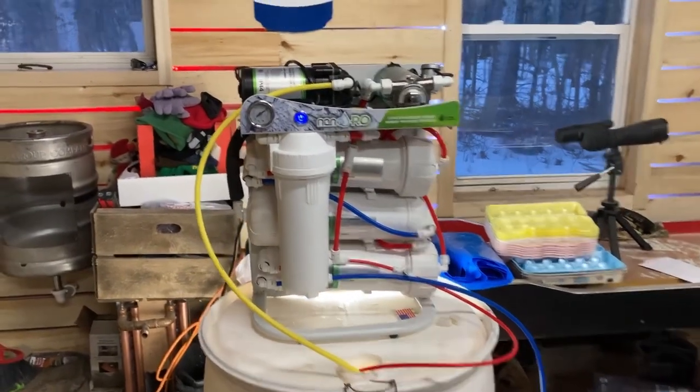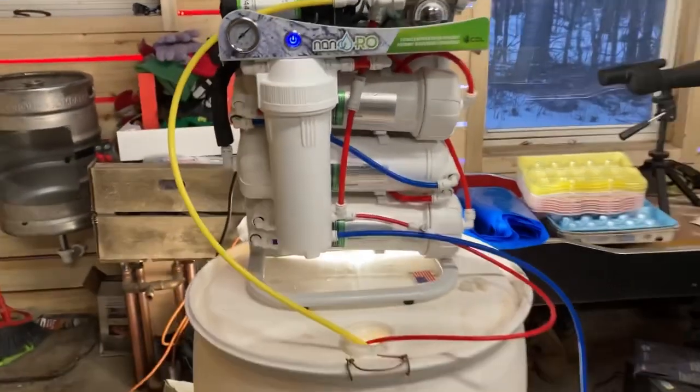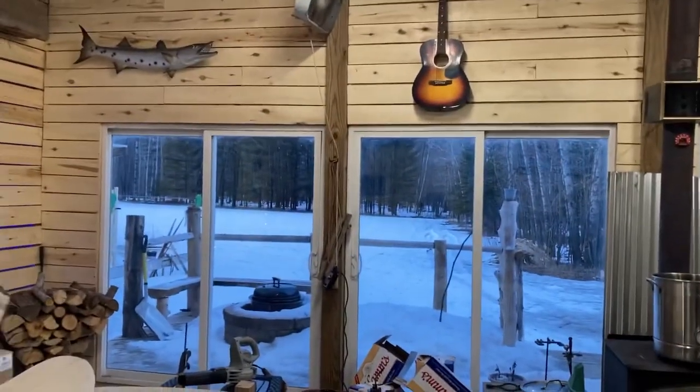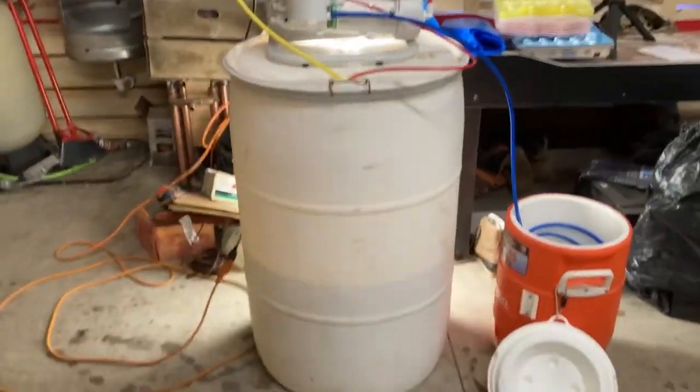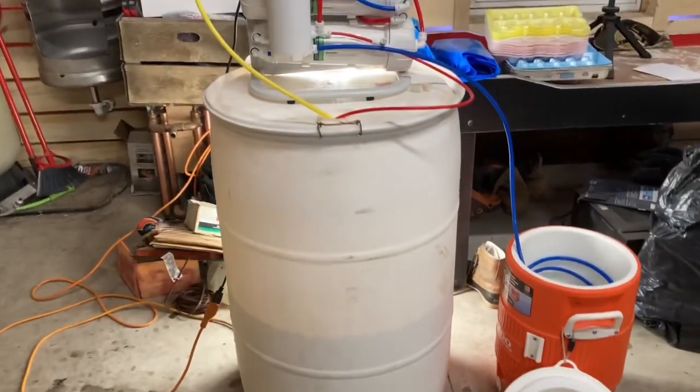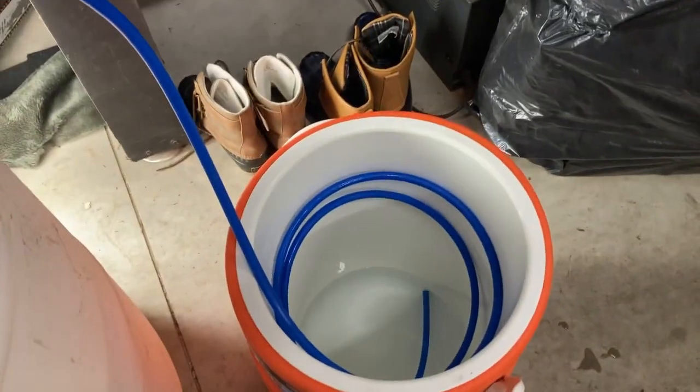All right, so this is the reverse osmosis system that I use. It's a nano RO with three membranes. And then here is the sap that we got from out there earlier today. We started off with 28 gallons of sap. So it's February. I mean, that wouldn't be good for when the season's going.